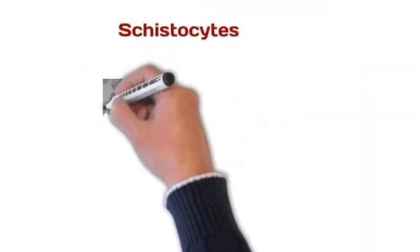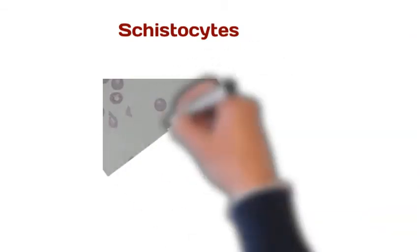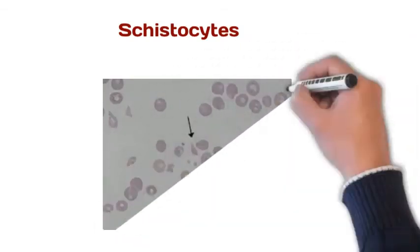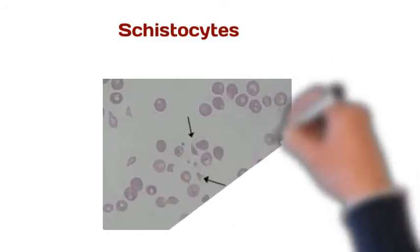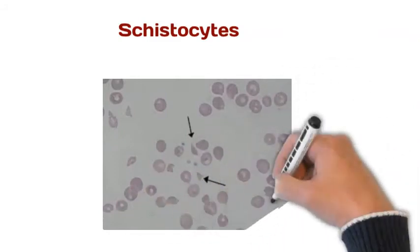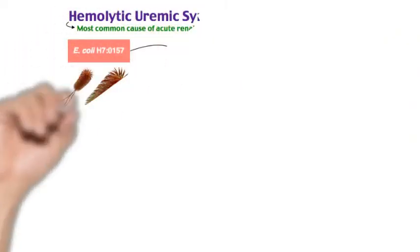This illustration shows mature RBCs along with a few fragmented RBCs, as depicted by arrows, representing the schistocytes seen in Hemolytic Uremic Syndrome.